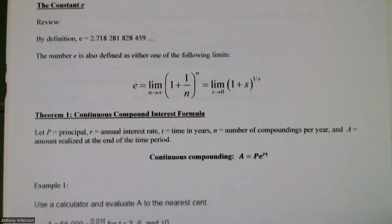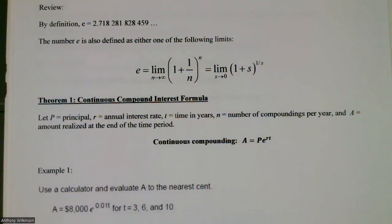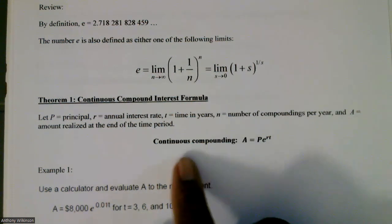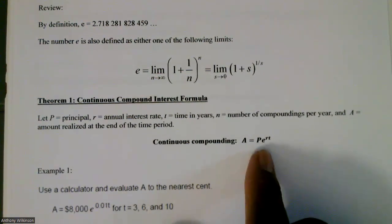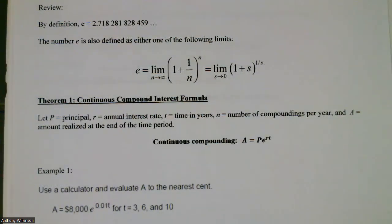Now let's talk about the compound interest formula for continuous compounding — that's Theorem 1. We let P be the principal, R be the annual interest rate, T be the time in years, N be the number of compoundings per year, and A be the amount realized at the end of the time period. The continuous compounding formula is: A is equal to P times e to the RT.